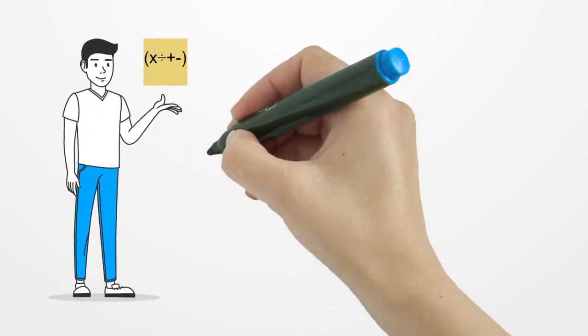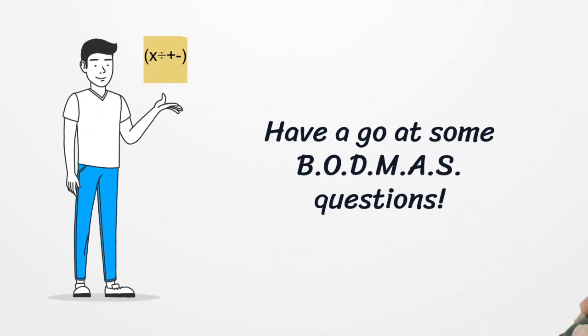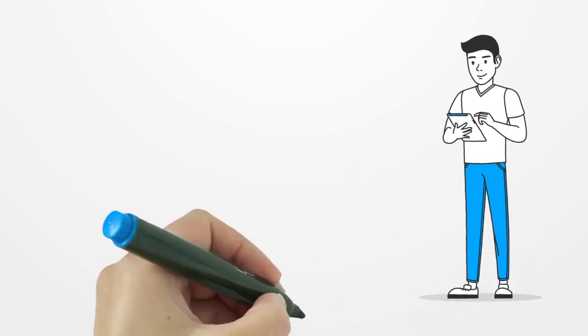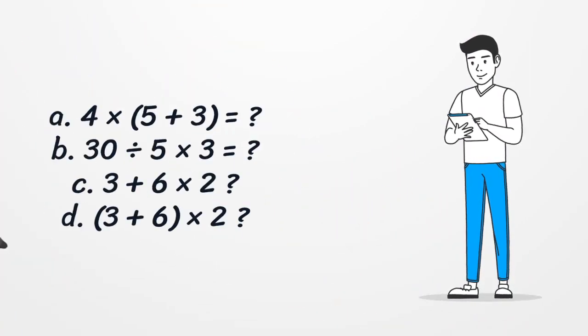Okay, so pause the video with these equations on the screen and don't forget to use brackets first. If there's no brackets, then go left to right using the order of operations. Times or divide first, followed by plus or minus left to right.